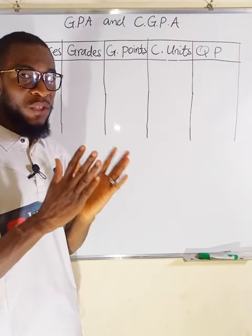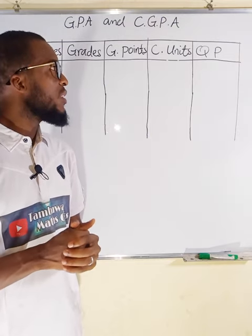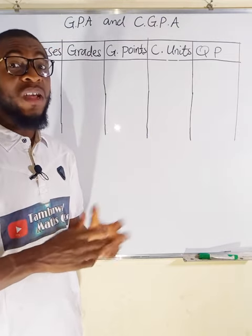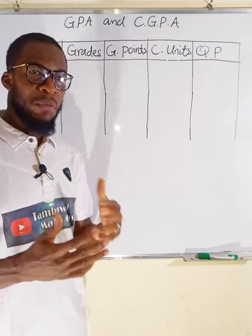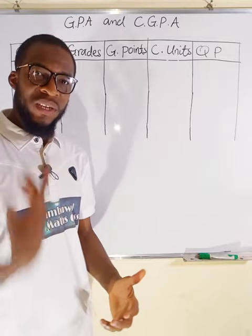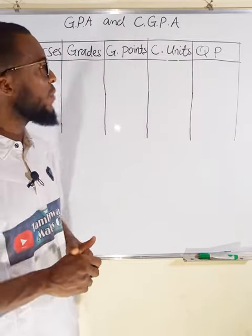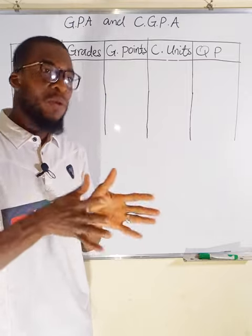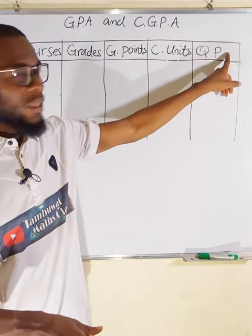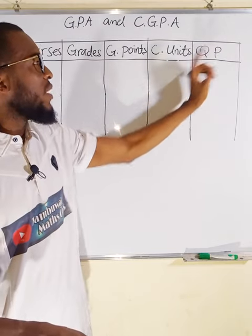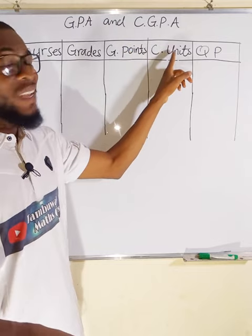Each course has a particular unit. Some universities outside the country call it credit hours. Some courses may be 4 units, 3 units, 1 unit, or 5 units — it depends on the unit of that course. And we have quality point, which is the product of grade point and credit unit.